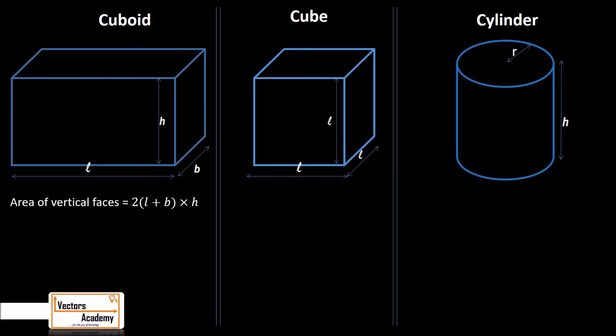The area of the vertical faces for a cuboid is 2(L + B) × H, where L is the length, B is the breadth and H is the height of a cuboid. The total surface area is 2(LB + BH + LH) and the volume is L × B × H.